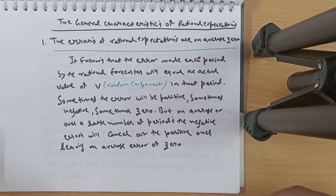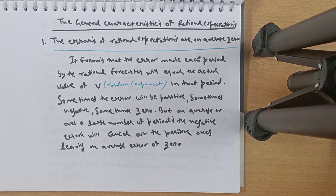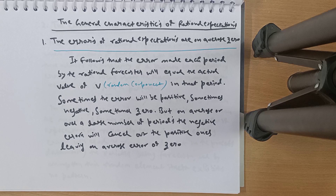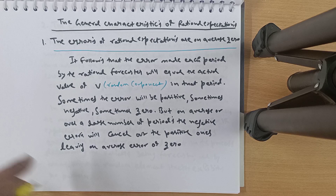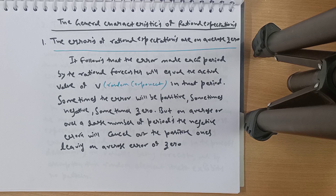Now, the general characteristics of rational expectations. First: errors of rational expectation are zero on average. The error made each period by the rational forecaster equals the actual value of the random component in that period. Suppose you expected 1,00,000 but COVID hit — that is a random component that caused the change. Sometimes errors will be positive, sometimes negative, sometimes zero, but on average they cancel out, so rational expectation errors are zero on average.